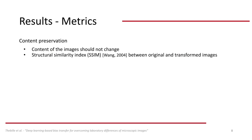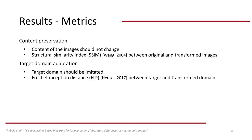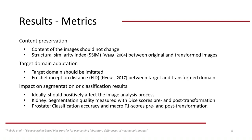We evaluated the transformation quality regarding three metrics. The first and most important is content preservation: as we are dealing with medical images, not changing the image content is extremely important, and we measured this by calculating the SSIM between the original and the transformed images. Second, we want good adaptation to the target domain, measured by the FID between the target and transformed domain, with the FID between the original domains as a baseline. Third, we also care about the impact on the segmentation or classification results. For kidney biopsies, DICE scores were calculated to measure segmentation quality. For prostate biopsies, we looked at accuracy and macro F1 scores.